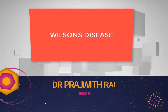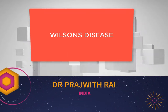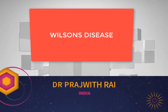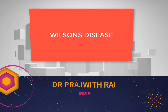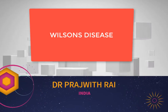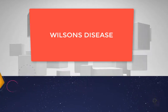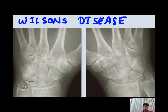Wilson's disease, also called hepatolenticular disease, is characterized by deposition of copper in different parts of the body. When the joint is involved, it will have symmetrical involvement.